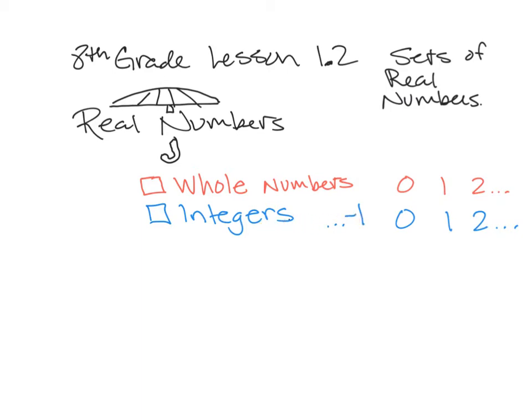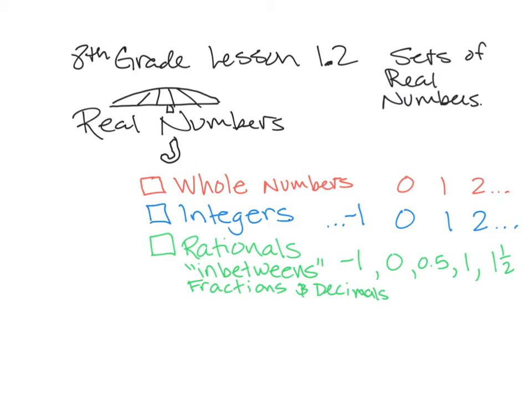Also under the real numbers umbrella is rational numbers, and those are—I call them the in-betweens—like the fractions and decimals that would fall in between our integers or in between our whole numbers. So negative one still could be considered a rational number, zero is a rational number, zero point five is now a rational number. It's in between here but still it could be made into a fraction, one half, so it's a rational number.